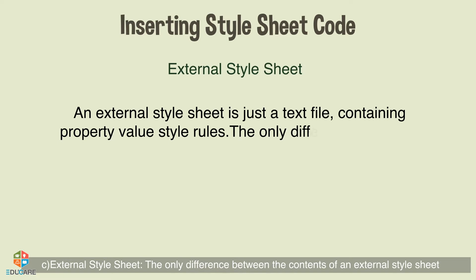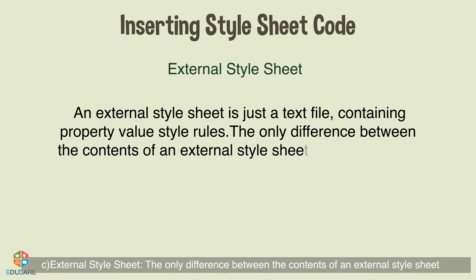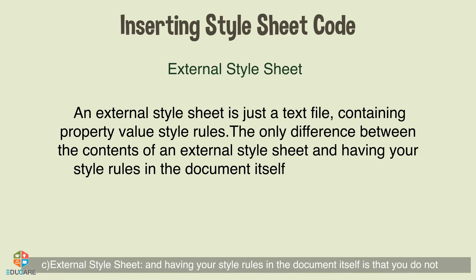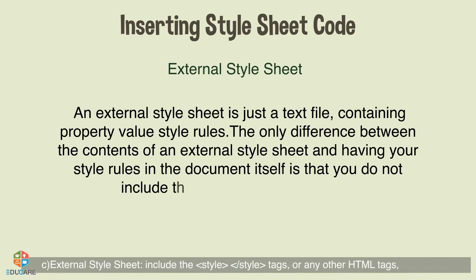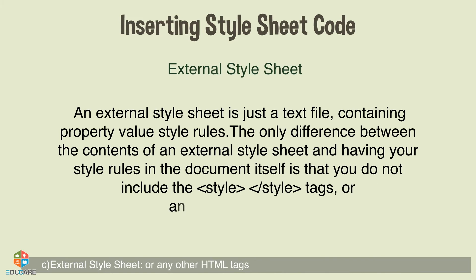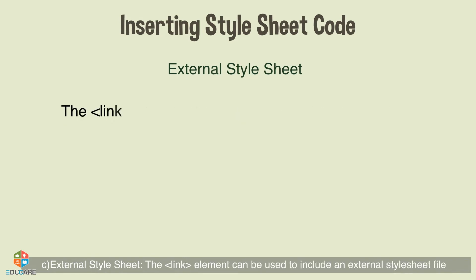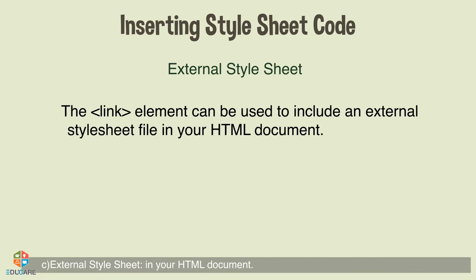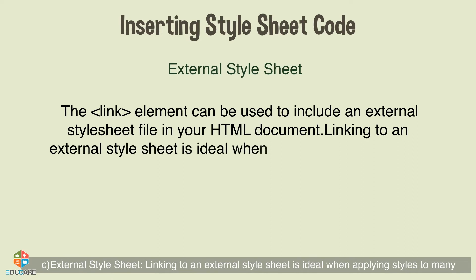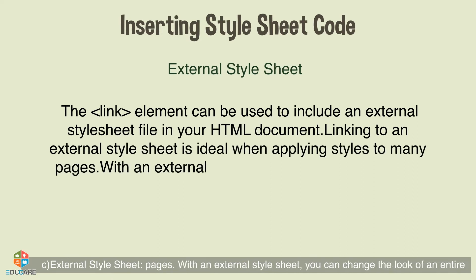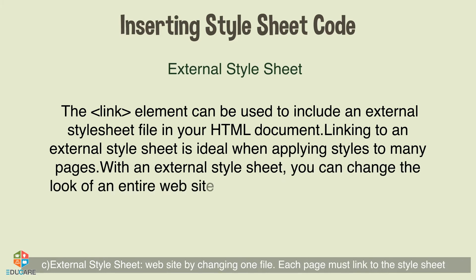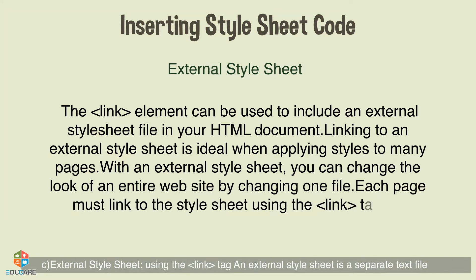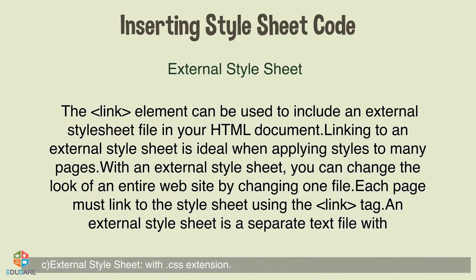External Style Sheet: An external style sheet is just a text file containing property-value style rules. The only difference from having style rules in the document itself is that you do not include the opening and closing style tags or any other HTML tags. The link element can be used to include an external style sheet file in your HTML document. Linking to an external style sheet is ideal when applying styles to many pages. Each page must link to the style sheet using the link tag. An external style sheet is a separate text file with a .css extension.